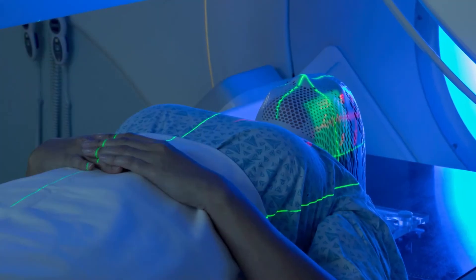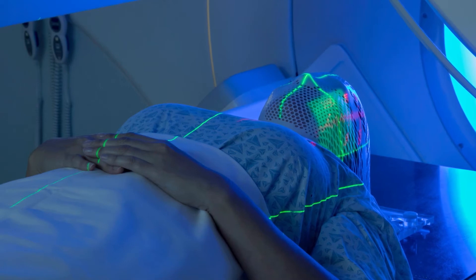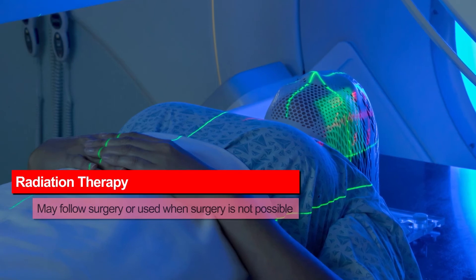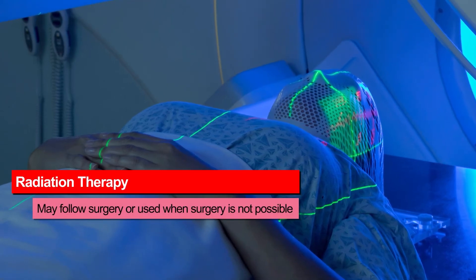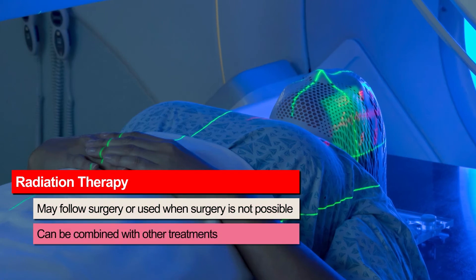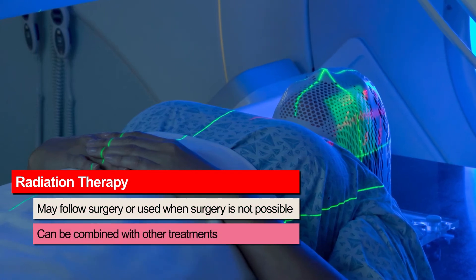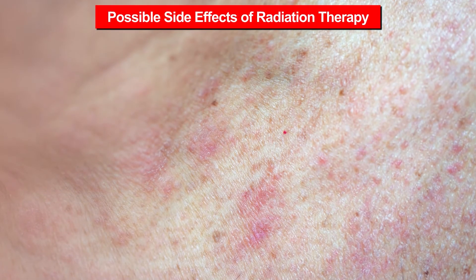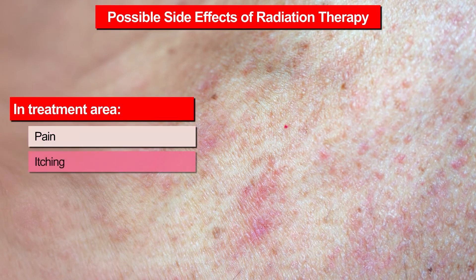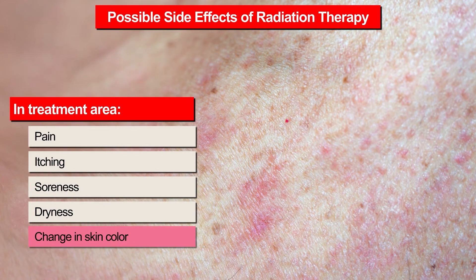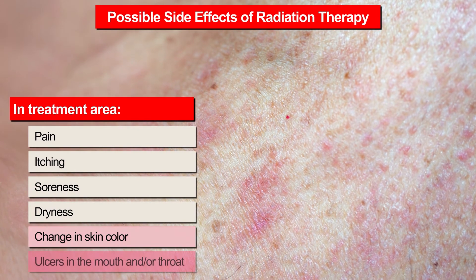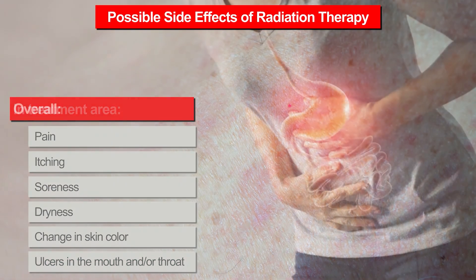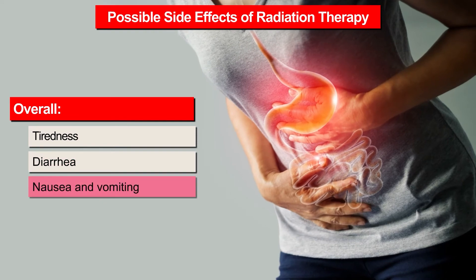When skin cancer is advanced, surgery alone will not treat it. Other treatments are needed to destroy cancer cells and slow the spread of the disease. Radiation therapy may follow surgery or be used when surgery is not possible, and it may be combined with other treatments. During radiation, high-energy beams are directed at the cancerous area. Common side effects include pain, itching, soreness, dryness, or a change in the color of the skin. If radiation occurs near the mouth or throat, this can cause ulcers or dry mouth. Radiation can also cause tiredness, diarrhea, nausea, and vomiting.